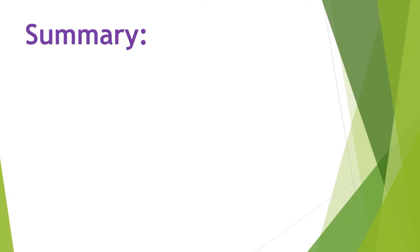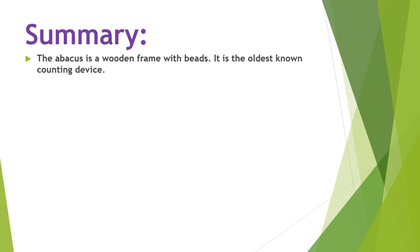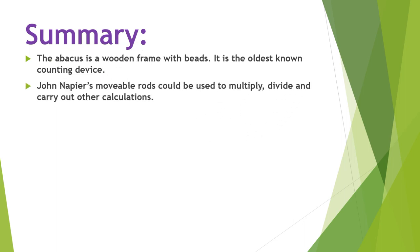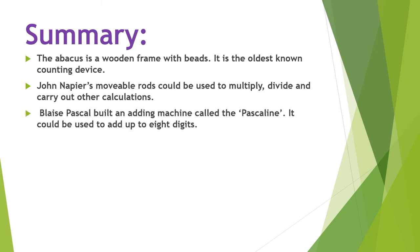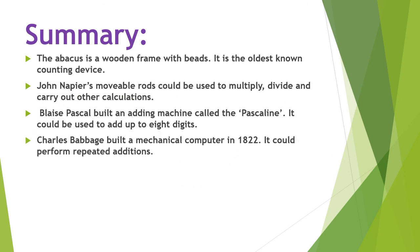Let's summarize the topic. The abacus is a wooden frame with beads and is the oldest known counting device. John Napier's movable rods could be used to multiply, divide, and carry out other calculations. Blaise Pascal built an adding machine called the Pascaline, which could be used to add up to 8 digits. Charles Babbage built a mechanical computer in 1822 that could perform repeated additions.